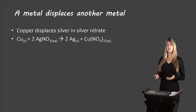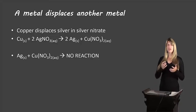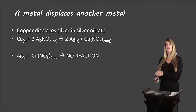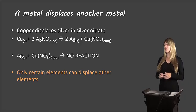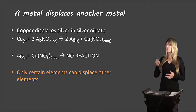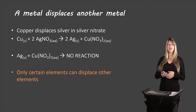Copper displaces silver in a silver nitrate solution, and there's the equation for what's happening. However, if we tried to make a solution of copper nitrate and put a silver wire in there, there will be no reaction. Only certain elements can displace other elements — copper can displace silver, but silver cannot displace copper.